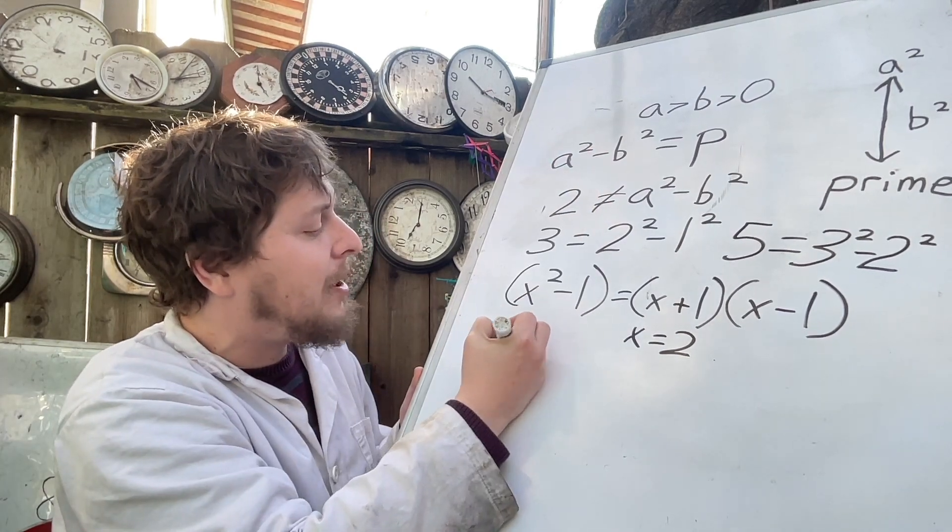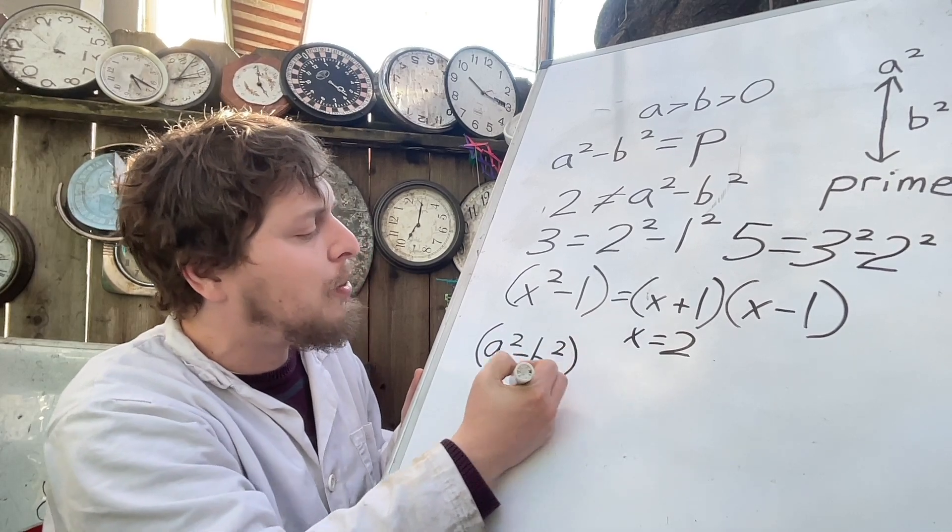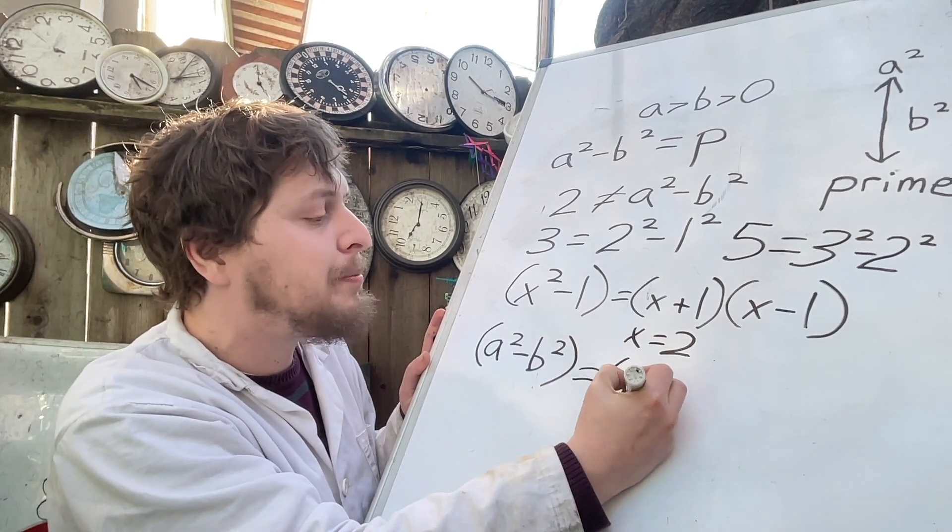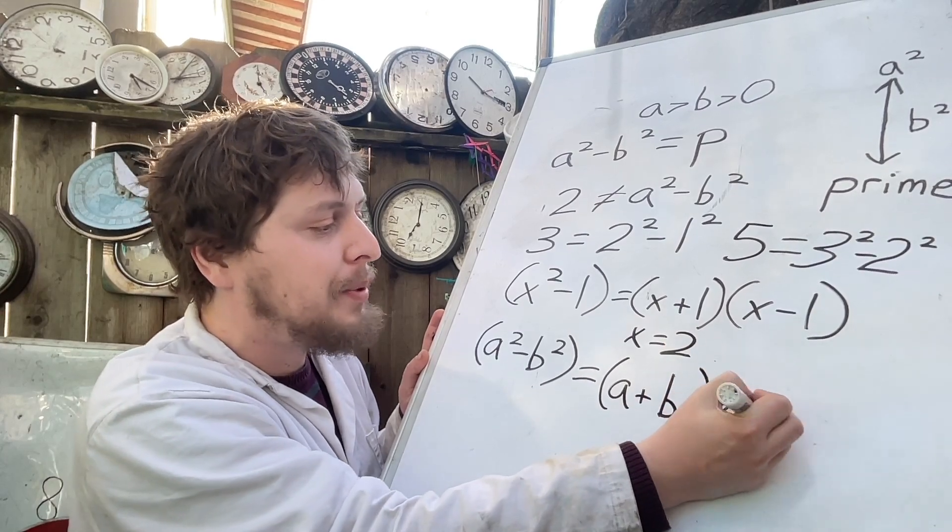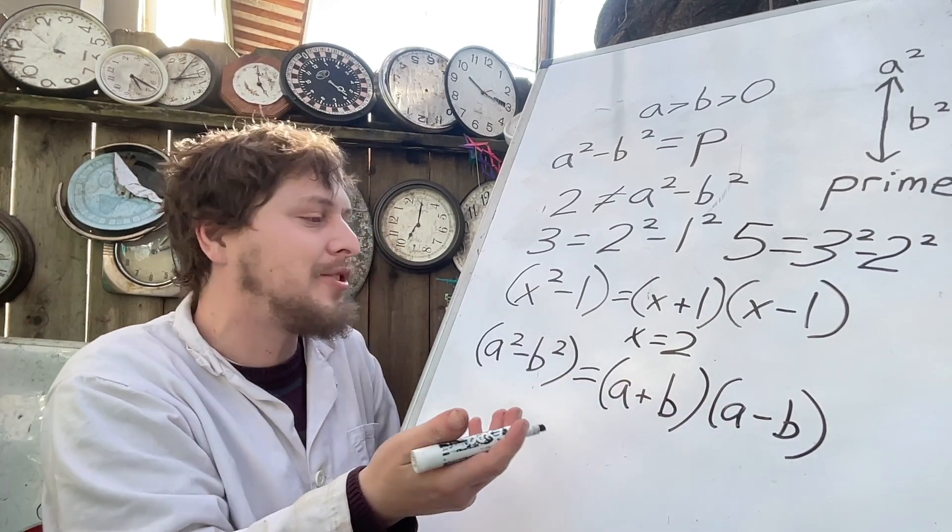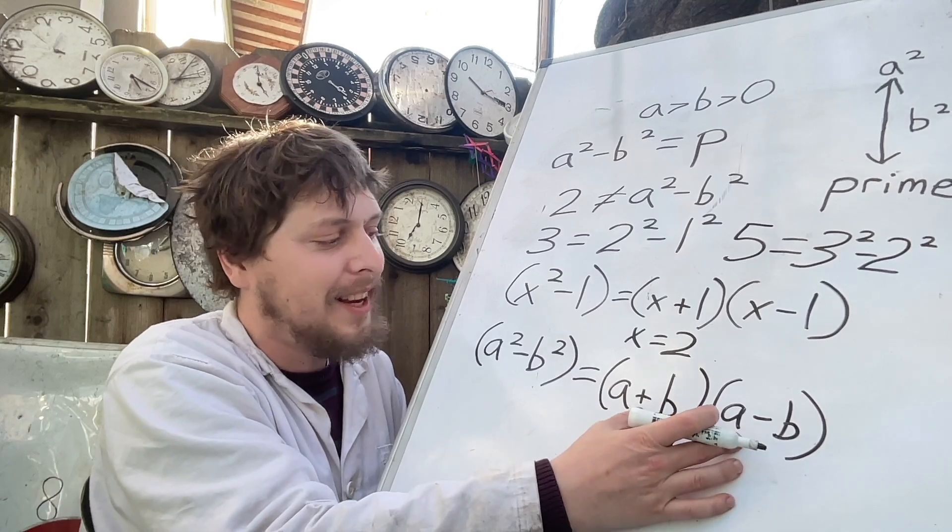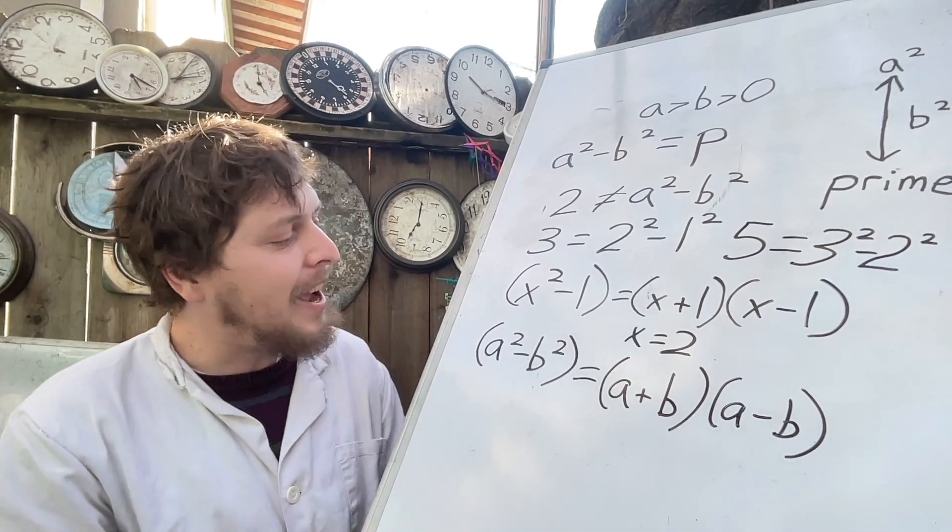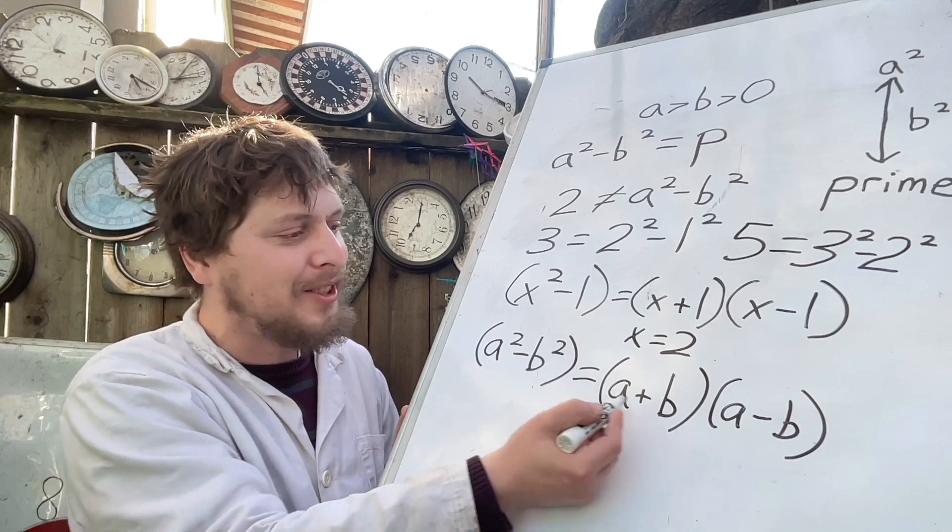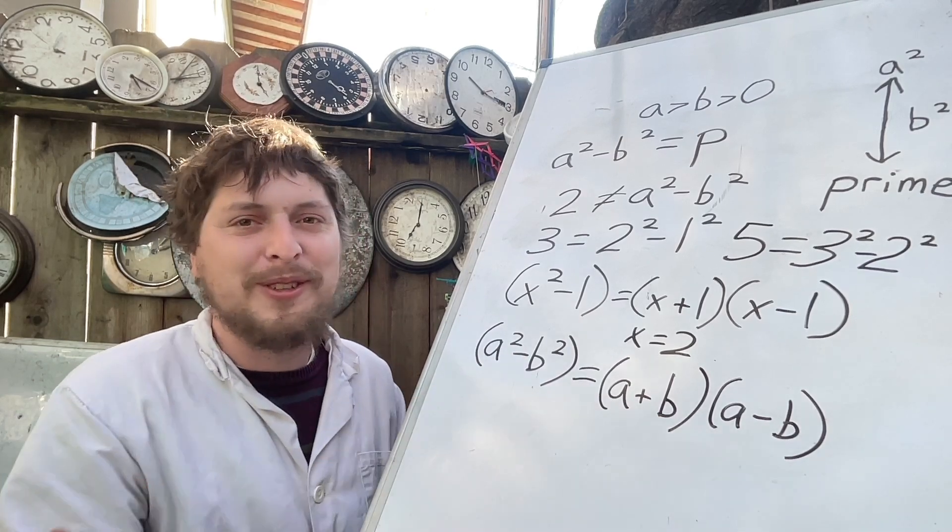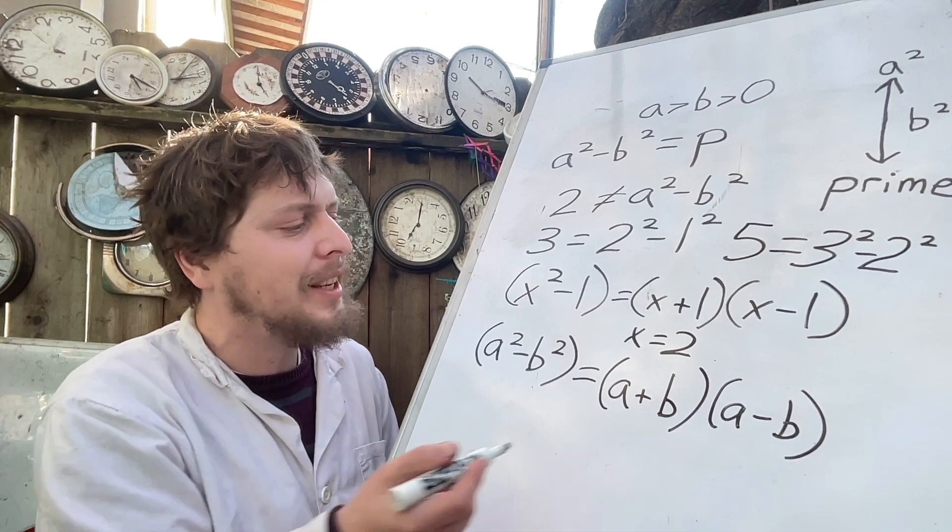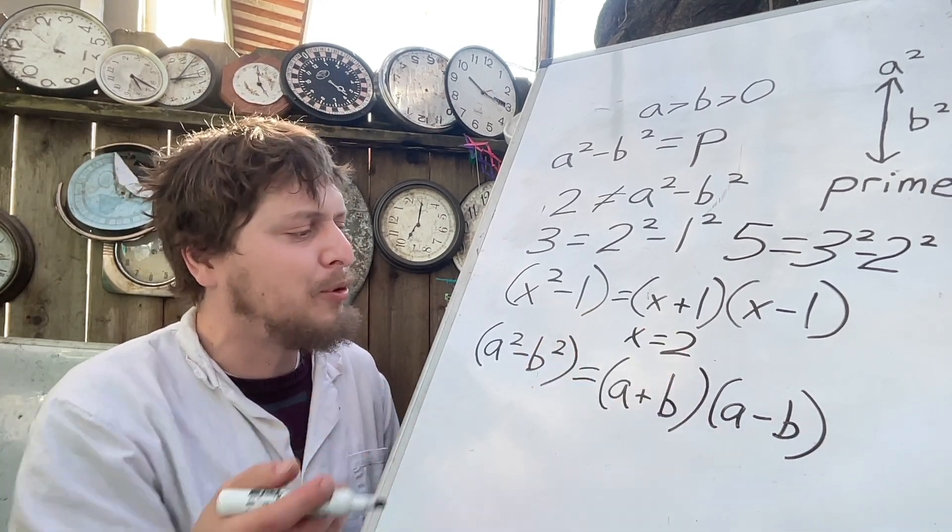A squared minus b squared can be factored as a plus b times a minus b. This is a cool classic identity. And you can also just verify that it's correct by using the distributive property here. And you will get that as the product. Now what this tells us is that it's going to be kind of difficult for the difference of squares to be a prime because we have these two things multiplied together like factors. And it could only be a possible prime if one of these equaled one and the other was the prime itself.